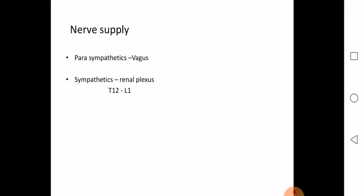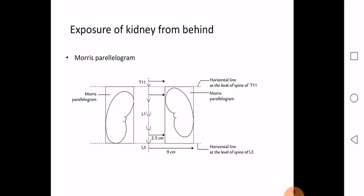In a renal arteriogram, a catheter is inserted into the femoral artery in the leg. It is threaded through the external iliac, common iliac, and abdominal aorta until it reaches the renal artery, where contrast media is injected and the renal vasculature is visualized.